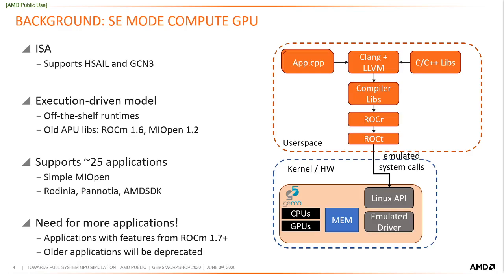Focusing on the figure on the right, the user space box shows the components of the runtime which run in user space. The application loads compiler libraries and ROCr — the ROCr runtime — which communicates to the driver using ROCt, or the ROCm Thunk. In the case of GEM5, the Thunk is an ioctl interface which communicates with an emulated driver which is part of the GEM5 source. This is one of the first changes that needs to be supported for full system mode. Since the Thunk interfaces with the driver, both of which are software components, they are subject to change much more often than the interface between the driver and the hardware itself. This means much more maintenance is required on the codebase to keep up to date with the most recent ROCr stack.